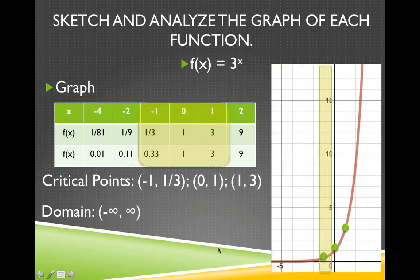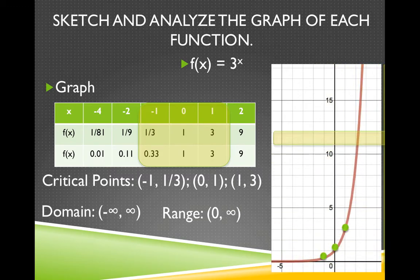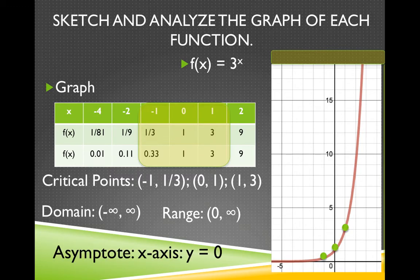The domain of this function is all real numbers. The range is from 0 to positive infinity, not including 0, because this function will never reach 0. The y value will get very, very close, but won't ever reach 0. This means there is an asymptote — a line the function will never touch — and in this case it's the x-axis, or y equals 0.